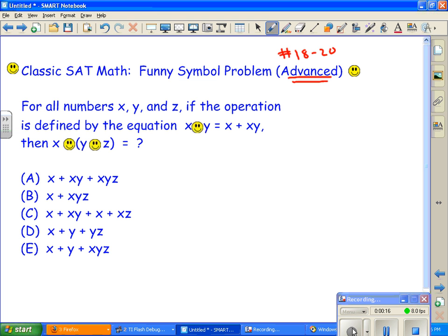It says for all numbers x, y, and z, if the operation is defined by the equation x symbol y equals x plus x times y, then what is x symbol the quantity y symbol z?